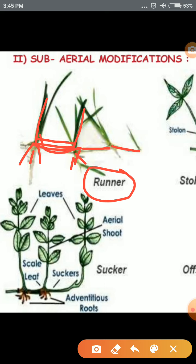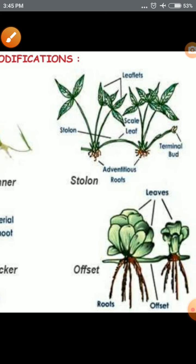The runner forms slender creeping branches with nodes and internodes, and adventitious roots develop from them. Oxalis and grass are basic examples of runners. Stolon is similar to a runner but is a slender lateral branch that originates from the base of the stem and grows in an oblique nature. The basic example of stolon is strawberry.